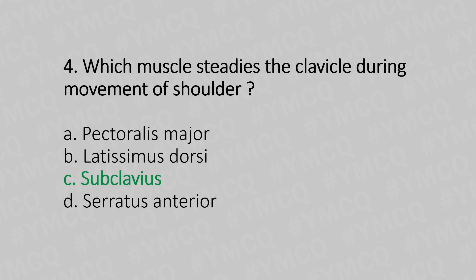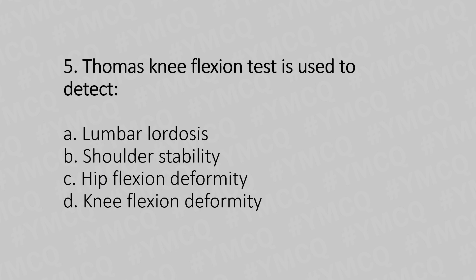Fifth question: Thomas knee flexion test is used to detect — Option A: lumbar lordosis. Option B: shoulder stability. Option C: hip flexion deformity. Option D: knee flexion deformity. The answer is Option C, hip flexion deformity.